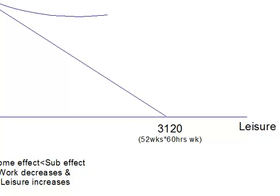Let's say we have an average year: 2 weeks off, 40 hours a week — that's 2,000 hours a year. From the maximum of 3,120 hours, that means 1,120 hours of leisure. So our indifference curve says we want exactly 2,000 hours of work and 1,120 hours of leisure, giving us $10 an hour times 2,000 hours, which is $20,000.